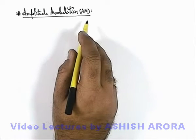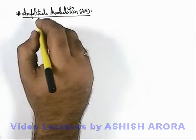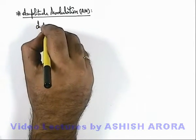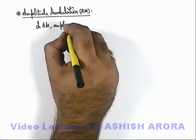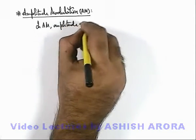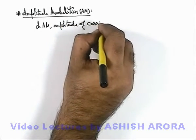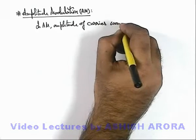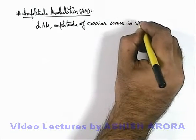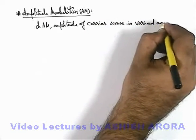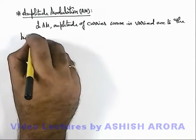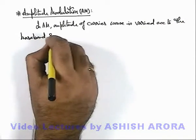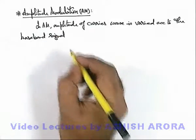Let us now study about amplitude modulation. In amplitude modulation, the amplitude of the carrier wave is varied according to the baseband signal. This is what we have discussed in the previous section.